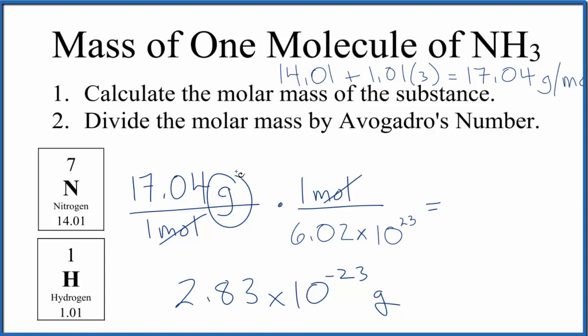So again, really all we did was divide molar mass by Avogadro's number to figure out the mass of one molecule of NH3.